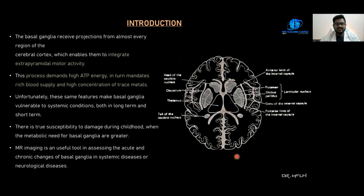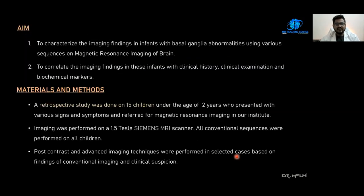MRI imaging is a useful tool in assessing acute and chronic changes of the basal ganglia in systemic and neurological diseases. The aim of this study is to characterize imaging findings in infants with basal ganglia abnormalities using different MRI sequences and to correlate these findings with clinical history, clinical examination, and biochemical markers. A retrospective study was performed on 15 children under the age of 2 years presenting with various signs and symptoms referred for MRI on a 1.5 Tesla Siemens scanner. All conventional sequences were performed, with post-contrast and advanced imaging techniques used in selected cases based on conventional imaging findings and clinical suspicion.